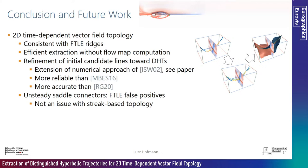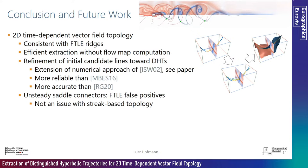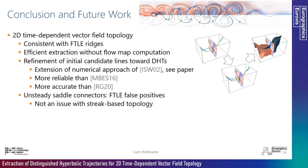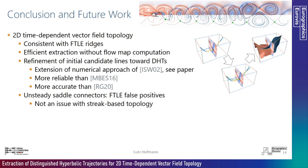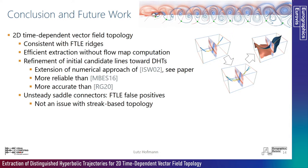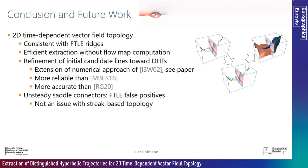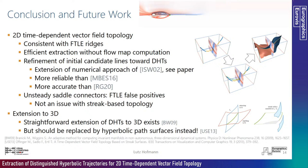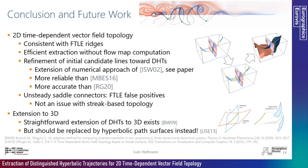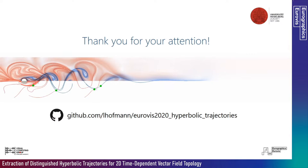In conclusion, we presented an approach to 2D time-dependent vector field topology consistent with FTLE ridges. Extraction is efficient because it does not rely on the flow map. It is based on refinement of initial candidate lines, extending the approach of Iida and colleagues — more reliable than Machado and colleagues, and more accurate than Rojo and Günther. We also discussed an unsteady equivalent of saddle connectors, corresponding to false positive FTLE-ridge intersections. Extension to 3D is future work, as the straightforward extension of hyperbolic trajectories to 3D does not suffice, as shown by Uefinger and colleagues. Source code for the refinement is available on GitHub.